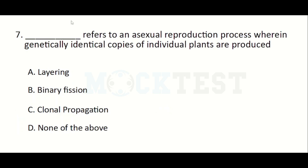Blank refers to an asexual reproduction process wherein genetically identical copies of individual plants are produced — Option A: Layering, Option B: Binary fission, Option C: Clonal propagation, Option D: None of the above. The answer is Clonal propagation.